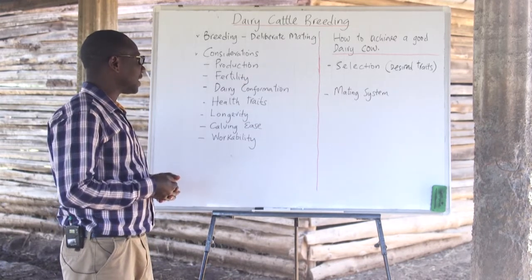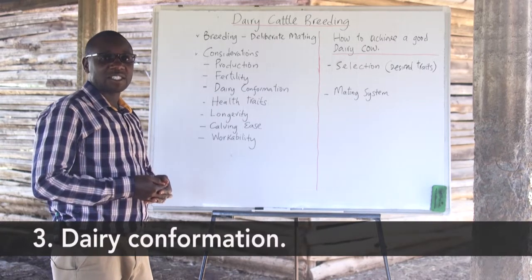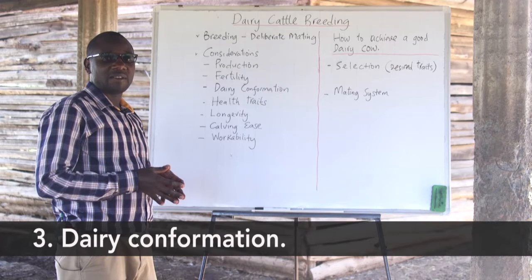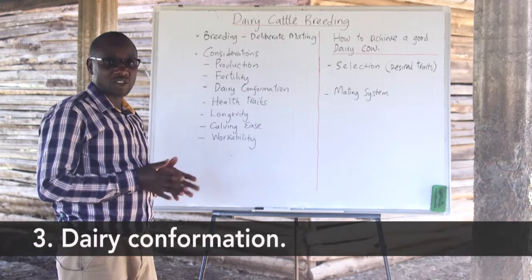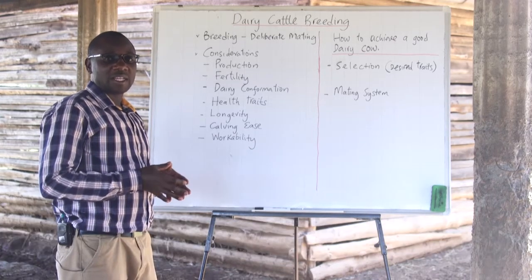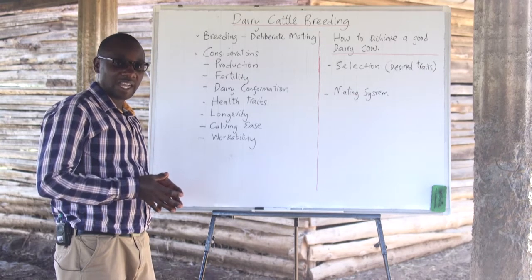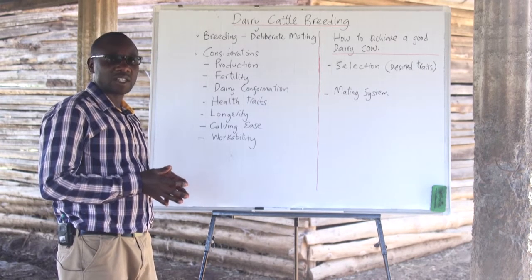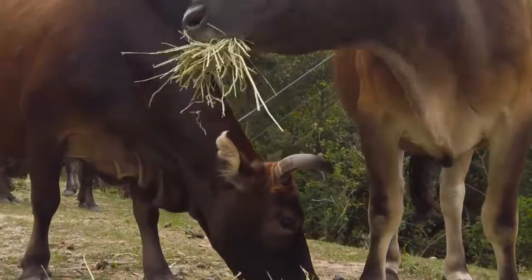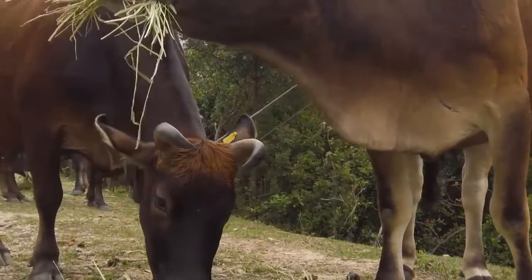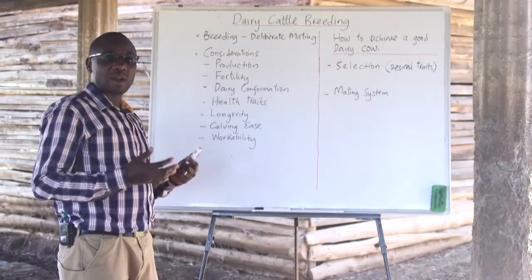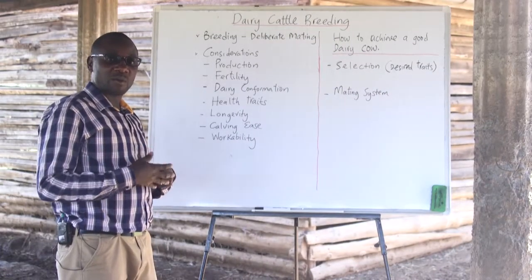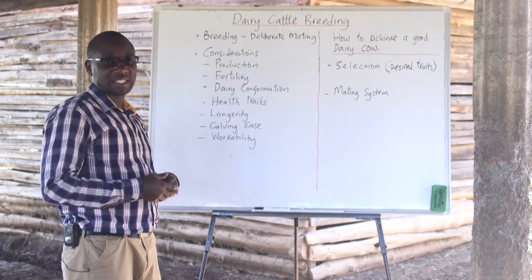The other aspect is dairy conformation, which is always dependent on the breed and the choice of the farmer. Dairy conformation speaks about the body structure of an animal. When selecting traits for a good dairy cow, a farmer needs to look at traits that help the cow produce more milk. Body conformation also helps the farmer know that the cow will last long on the farm, and its body structure and stature will help the cow take in more feeds and convert them into milk.